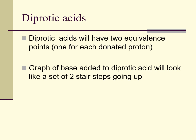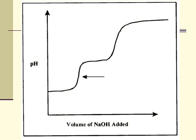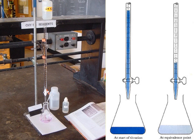Diprotic acids will have two equivalence points, one for each of the donated protons. A graph of base added to a diprotic acid would look like a set of two stair steps going up. This could be H₂SO₄, or depending on where seven is on the scale, maybe a weak acid like carbonic acid instead. There's the first proton donated, and here's the second proton being donated. By the way, a triprotic acid gives you three stair steps.